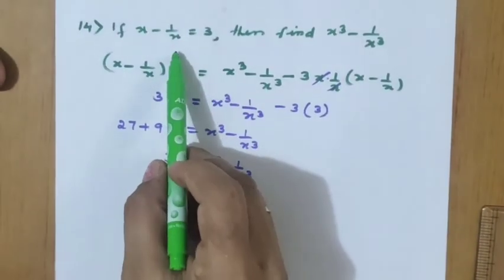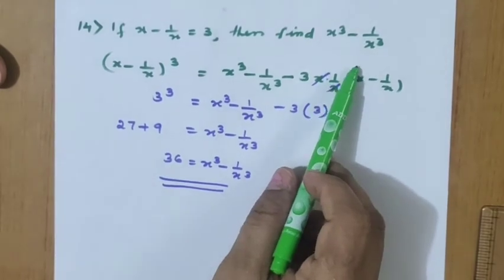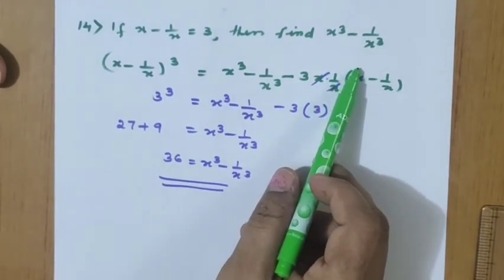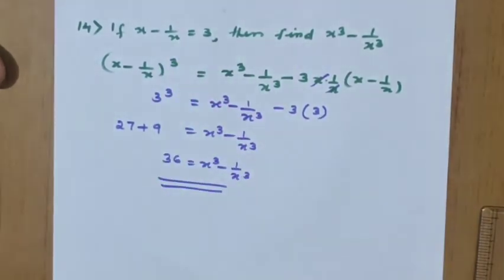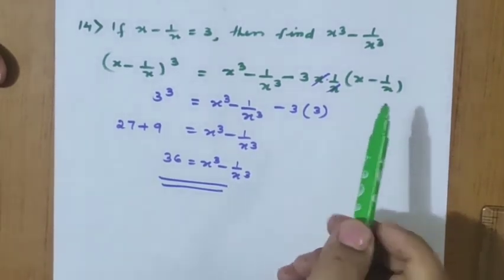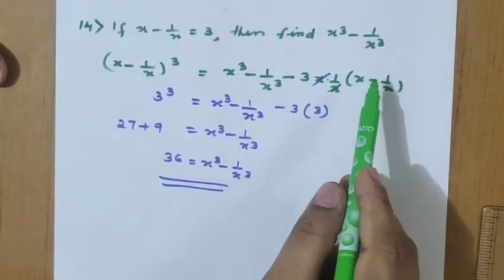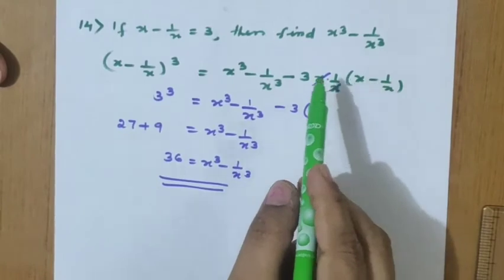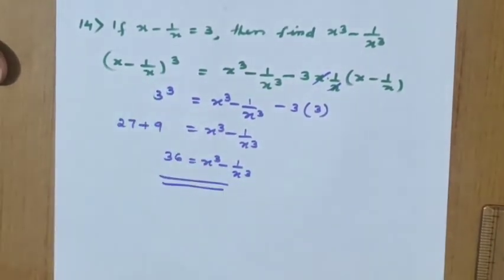Question 14: if x minus 1/x equals 3, find x³ minus 1/x³. Since x minus 1/x equals 3 is given, and we have to find the value involving x cube, the cube comes in the cubic expansion only, so we are doing (x minus 1/x)³.